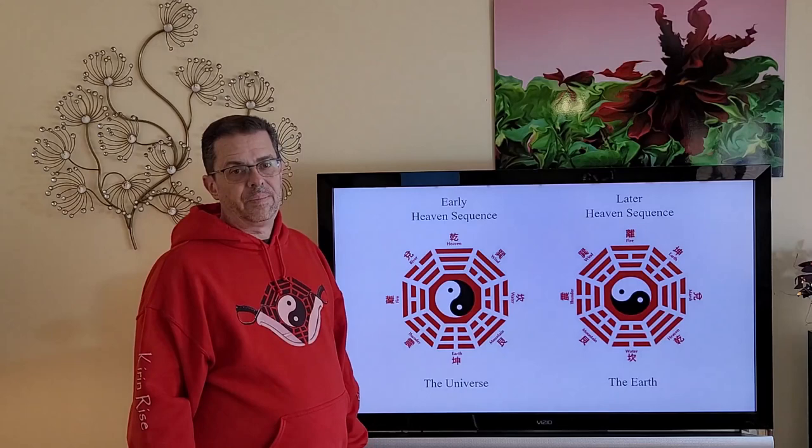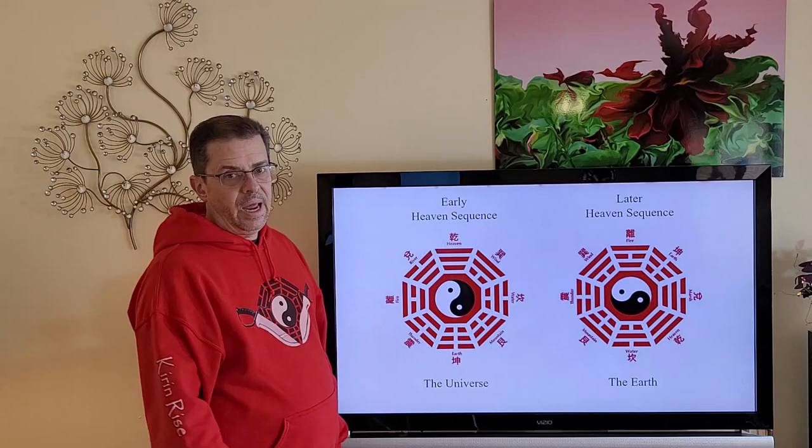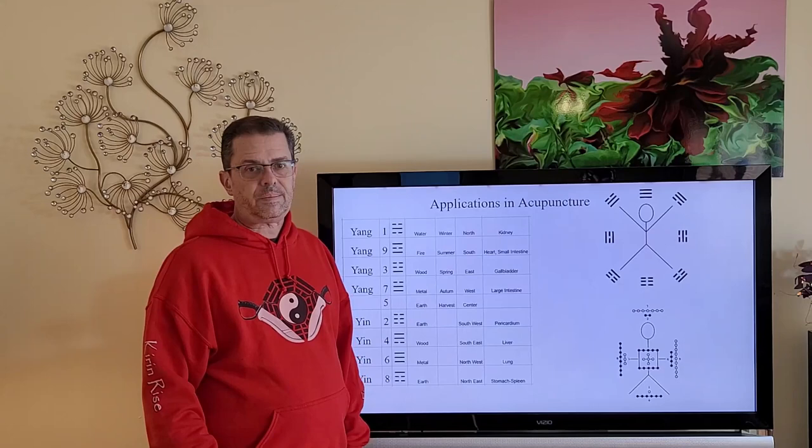So that's a little bit about each Bagua. The Early Heaven Sequence and its arrangement of opposites representing the universe and the Later Heaven Sequence and its cycles of change representing the earth.